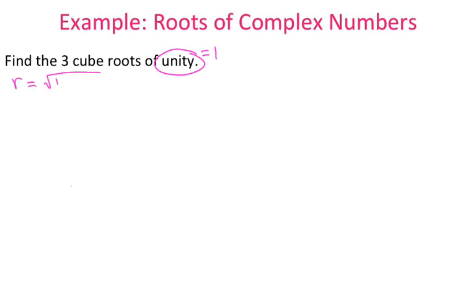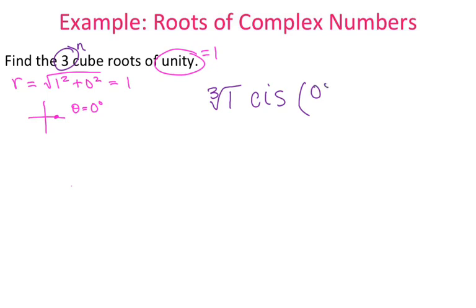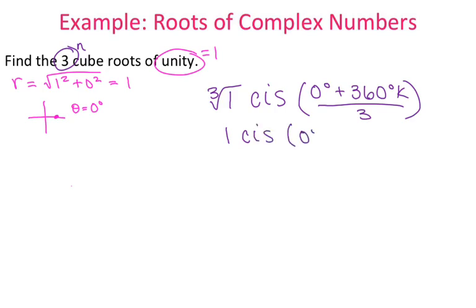We need to find r, theta, and n. 1 is the same as 1 plus 0i, so r equals the square root of 1 squared plus 0 squared, which is just 1. Graphing it, I'm on the positive x-axis, so theta is 0 degrees. Since I want the cube root, n is 3. Working through the formula: the cube root of 1 times cosine i sine of 0 plus 360k all over 3. Simplifying: cube root of 1 is 1, 0 divided by 3 is 0, and 360 divided by 3 is 120 degrees. So I have 1 cosine i sine of 0 plus 120k.